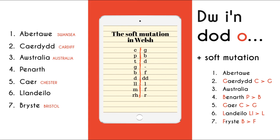Let's look at number five — Caer, or Chester. Is C on the list of letters that mutate? Yes, it is, and as we've seen before, it changes to G. So 'I'm from Chester' would be, Dwi'n dod o Gaer. Now let's look at number six — Llandeilo. We're not looking for the letter L on the list, as double-L is a letter in itself in Welsh. We're looking for Ll, and yes, it's there. Double-L changes to L. So 'I'm from Llandeilo' in Welsh would be, Dwi'n dod o Landeilo.